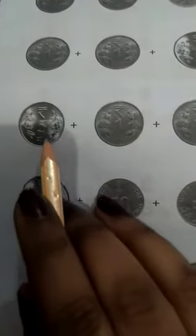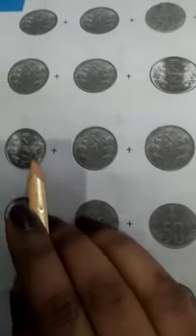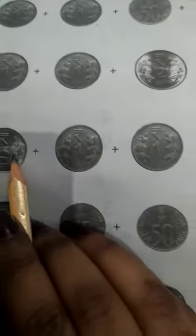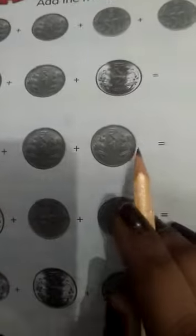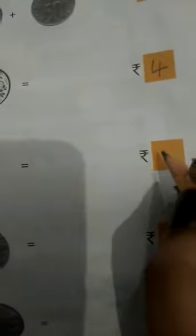This is a coin. You have to count them. How much is this? How much is this? How much is this? 5. How much is this? 5 rupees.